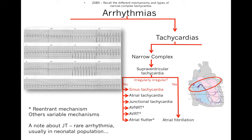We're going to move on to tachycardia, first looking at narrow complex tachycardia. Irregular-irregular tachycardias are most likely atrial fibrillation, though there are some other rare causes. In a regular rhythm, it's either sinus tachycardia, atrial tachycardia, junctional tachycardia, AVNRT, AVRT, or atrial flutter.